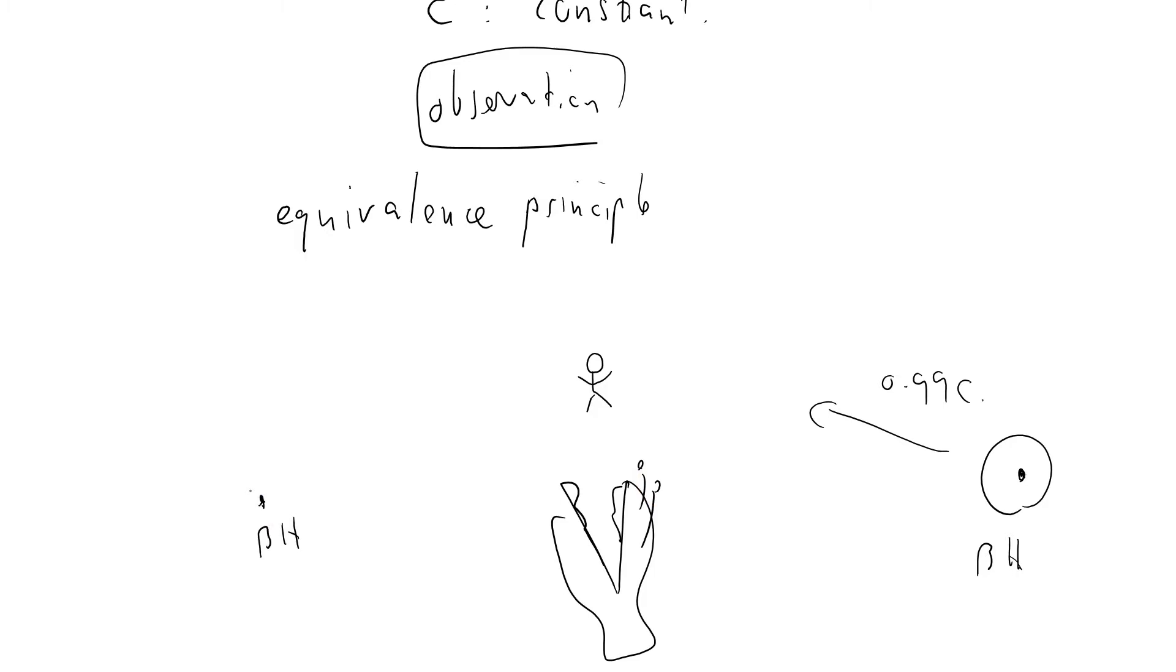I'm in terrible trouble. Now the equivalence principle basically says that if I build myself a little elevator, there's my little elevator, and I can construct this around myself, that basically says that my laws of physics look the same as they always do.